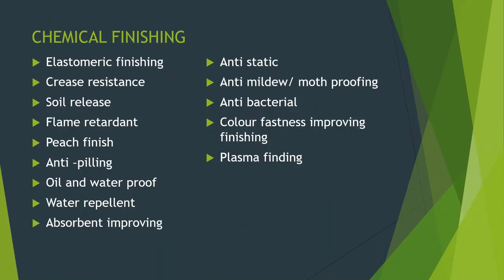Here are the chemical finishes available for textile material: elastomeric finishing, crease resistance, soil release, flame retardant, peach finish, anti-pilling, oil and waterproof, water repellent, absorbency-improving finish, anti-static finish, anti-mildew or moth proofing, antibacterial, color fastness-improving finish, and plasma finishing. These are the chemical finishes used in textile fabric based on the requirement.